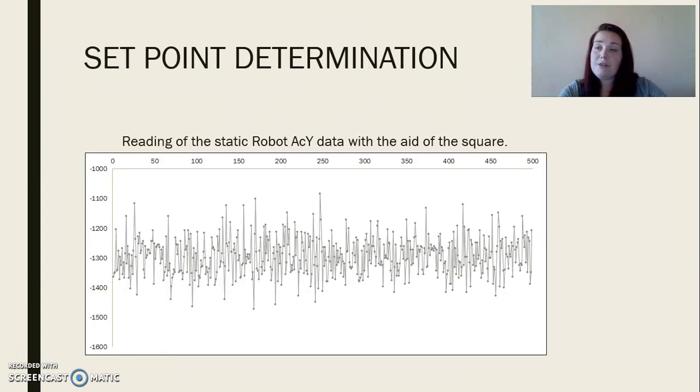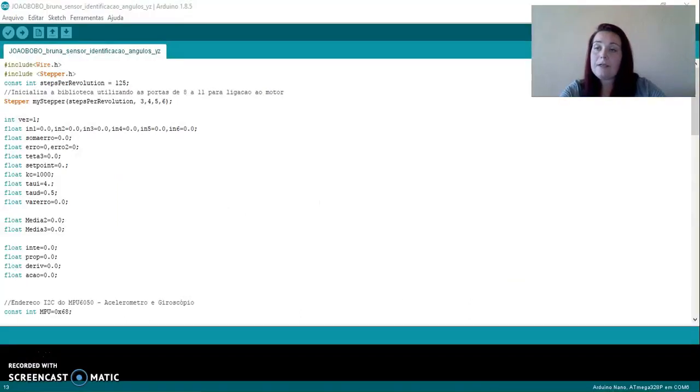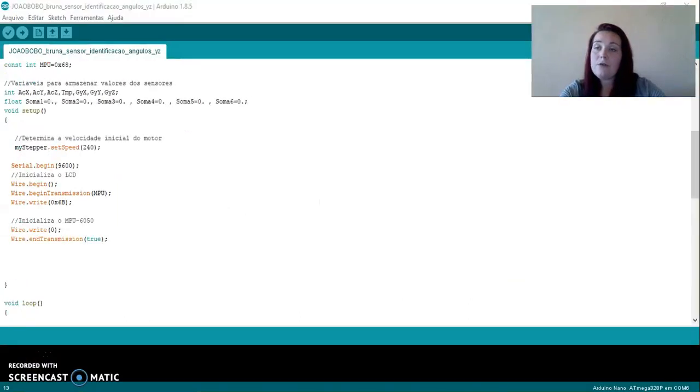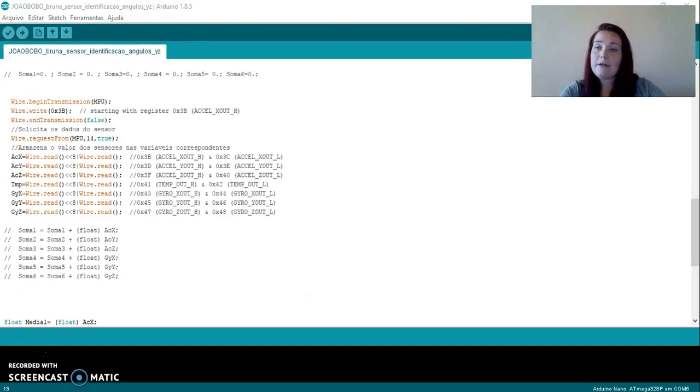By averaging the values obtained, the set point was found with a gross value shown on the screen, representing the vertical axis or 19 degrees. This was the code used to calibrate the accelerometer.